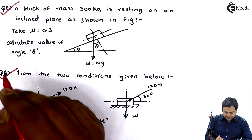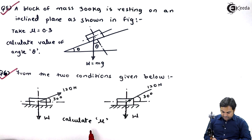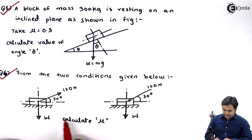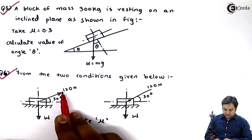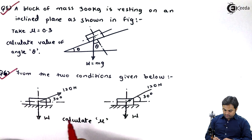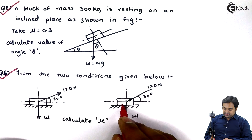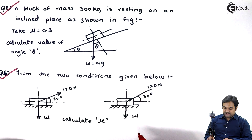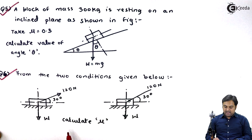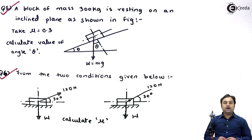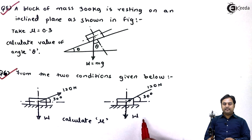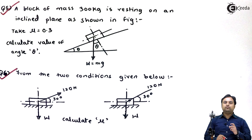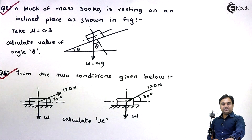Let us take question number six. From the two conditions given below, calculate mu. In the first condition, a 120 Newton force is pulling the block, inclined at 30 degrees to horizontal. In the second diagram, 120 Newton is a push type of force, also inclined at 30 degrees. Using both conditions, we have to calculate the coefficient of friction. I will use the first condition, then the second, and finally equate both.